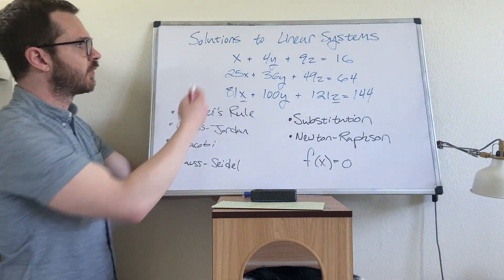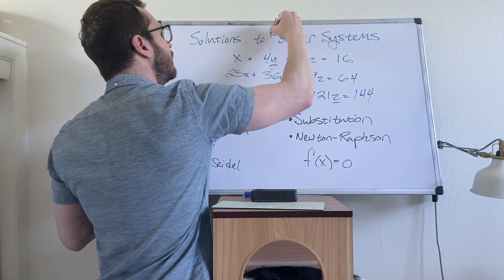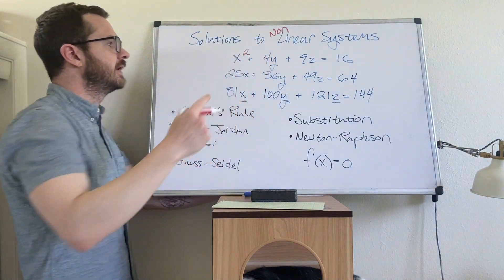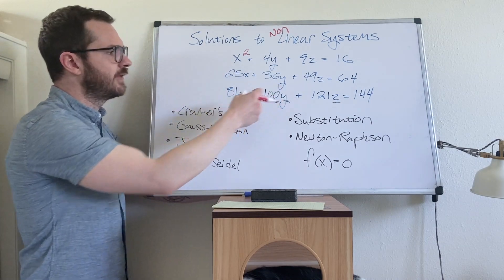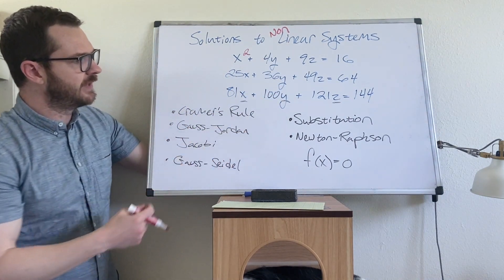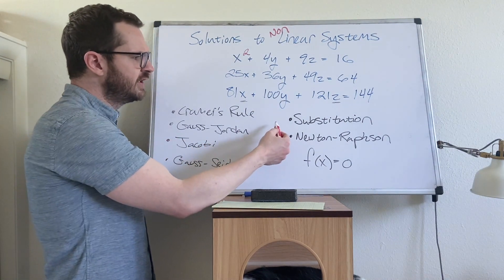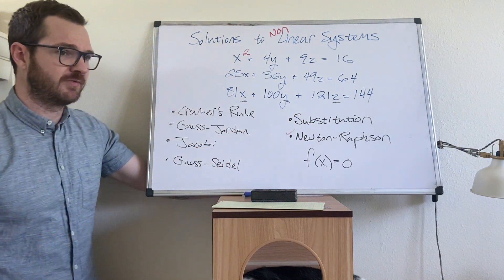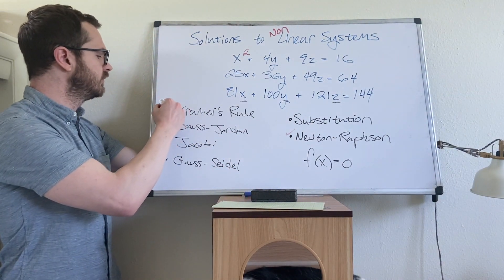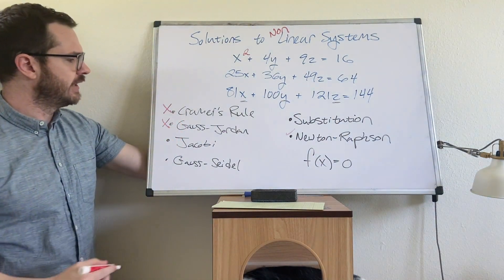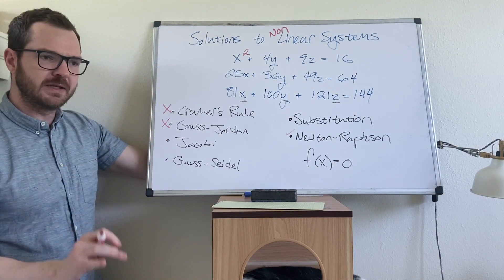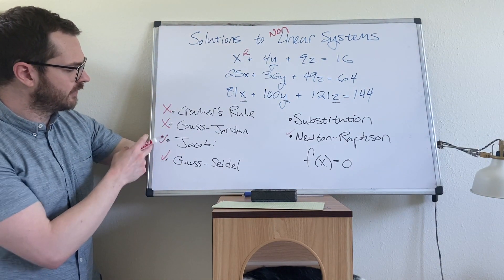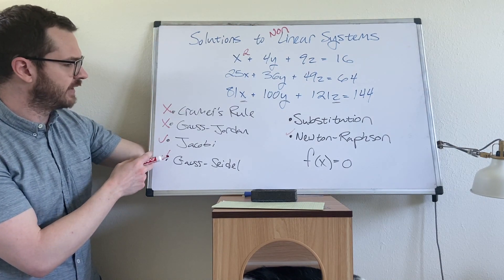These are all methods that work on linear systems, but what about non-linear systems? If we had an x-squared in just one of the equations, that makes the entire system non-linear. Which of these methods can be extended to non-linear systems? You could theoretically use the substitution method. You could definitely use Newton-Raphson, which we have done in a previous lab. You cannot use Cramer's rule, and you cannot use Gauss-Jordan — they are explicitly for linear systems only. You can use Jacobi and Gauss-Seidel, and we'll go into details about their applications when we do those discussions.